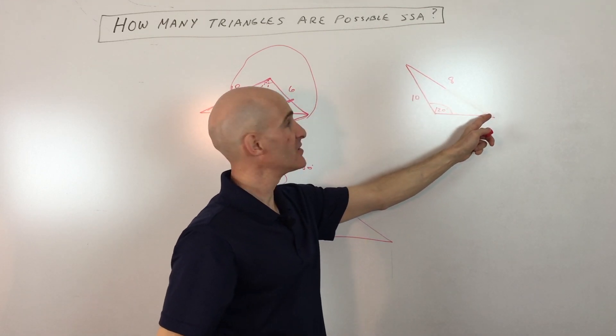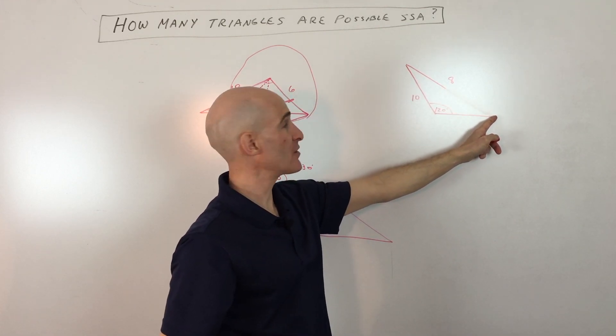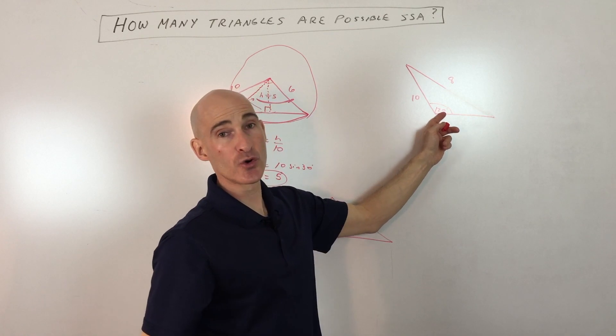to reach this other vertex of the triangle. So in this case, there's no triangle possible.